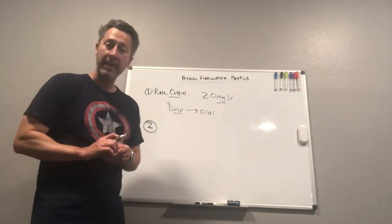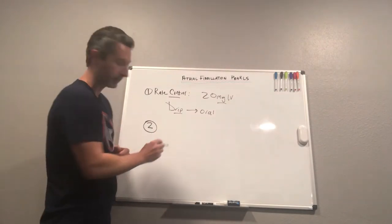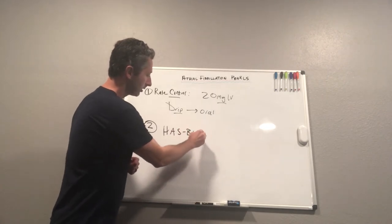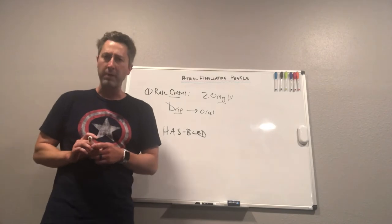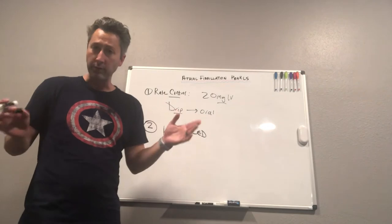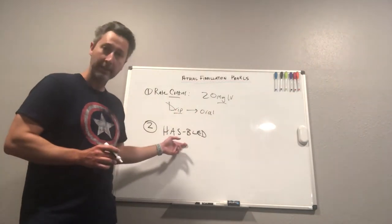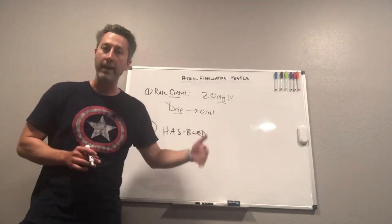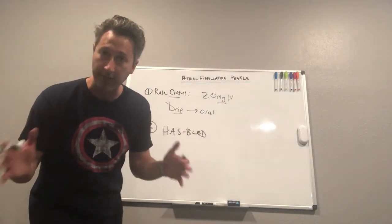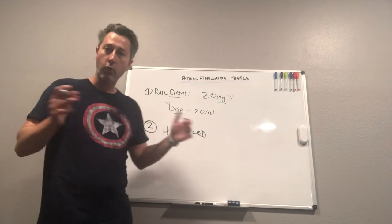The second thing is using the has-bled score correctly. So when we talk about anticoagulation in settings of AFib, there are really three things that we should be talking about: what's the stroke risk, we use the CHADS-VASc; what's the bleeding risk, we can use the has-bled score for this; and then which oral anticoagulant should I put this patient on. Here's a hint, should be a DOAC in the majority of patients. So the has-bled score is a scoring system that you can utilize that tells me how high of risk is this patient for bleeding.